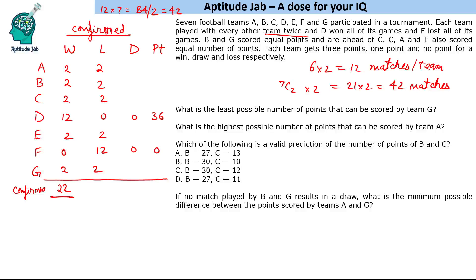We know the results of these 22 matches and there are 20 unknown matches. Out of 42 total matches, we know the result of 22: 12 wins for D and 12 losses for F, minus the 2 matches D vs F played in common. So 22 matches are confirmed and 20 are uncertain.